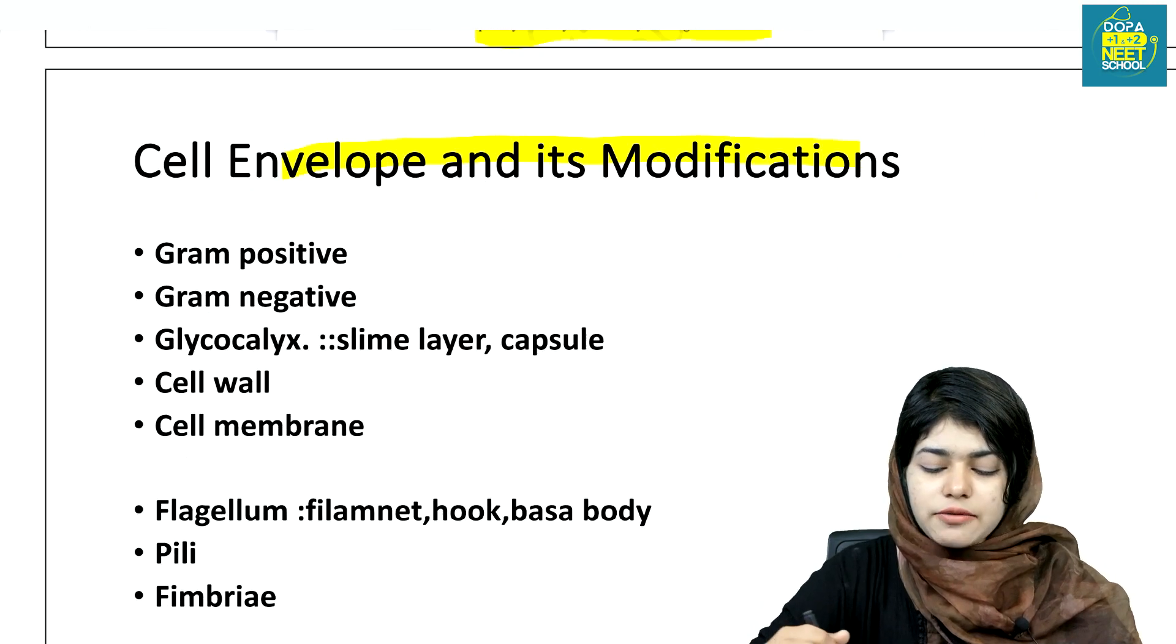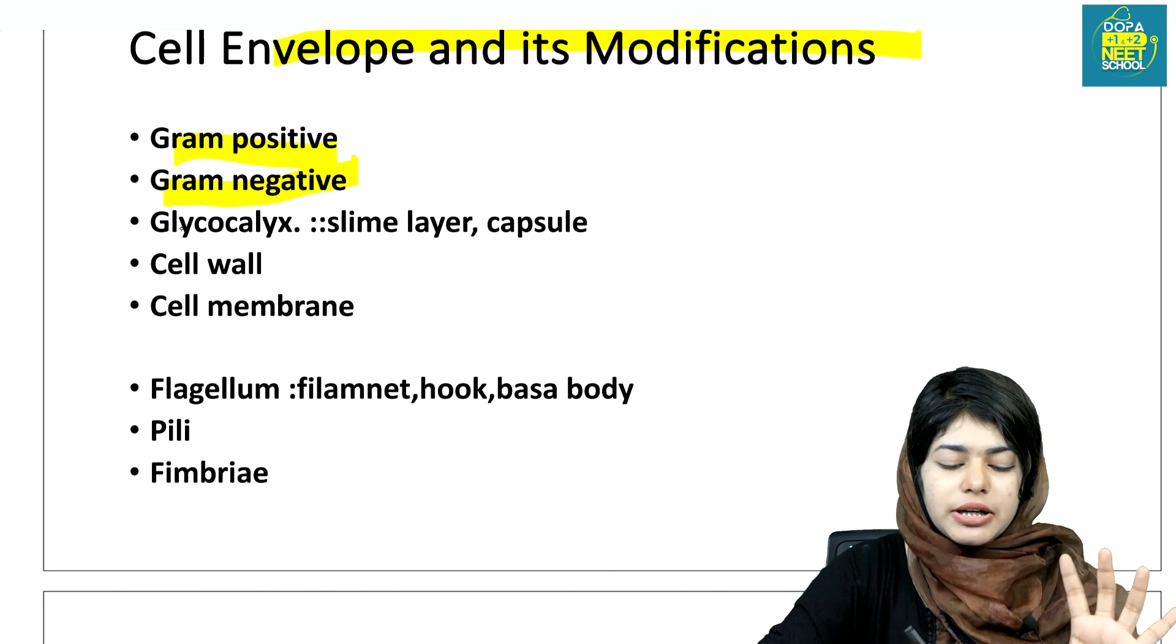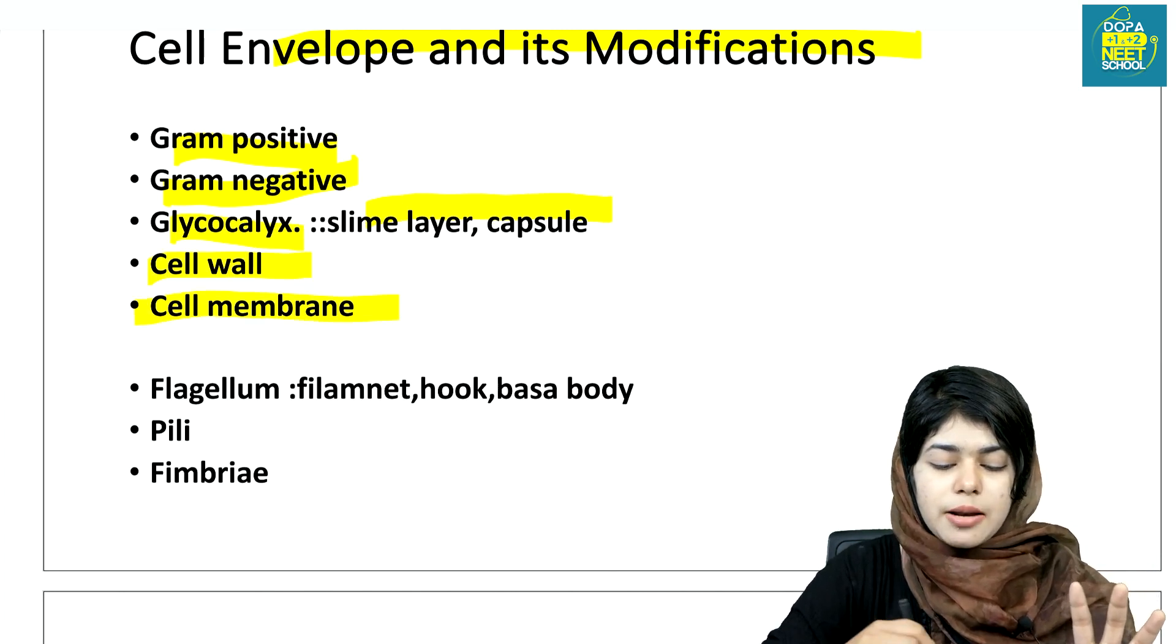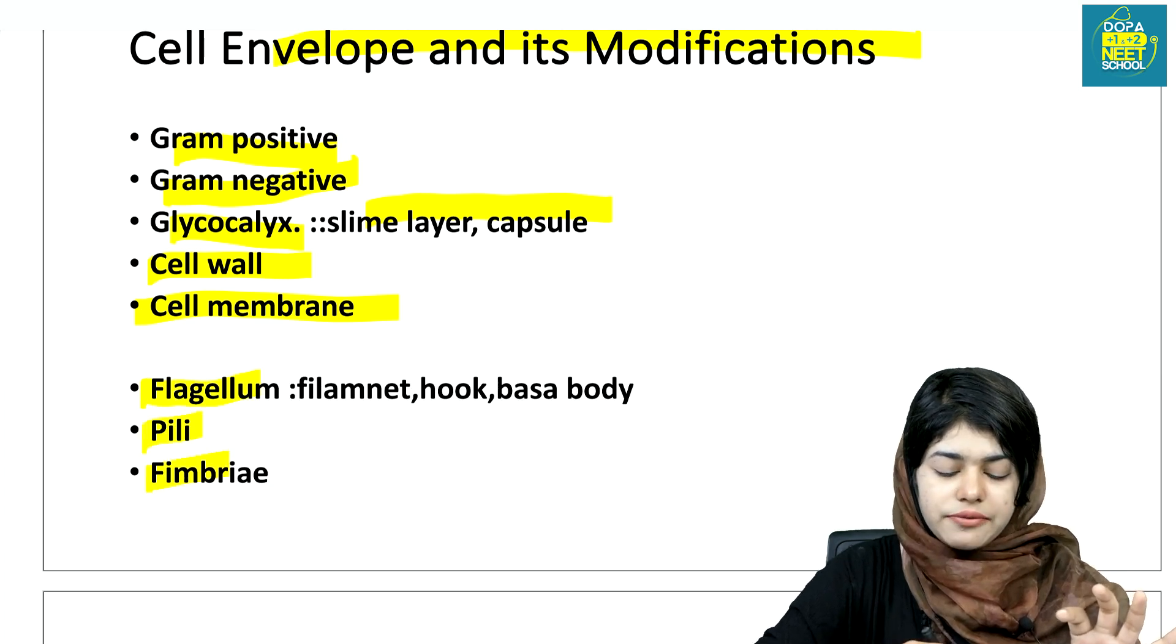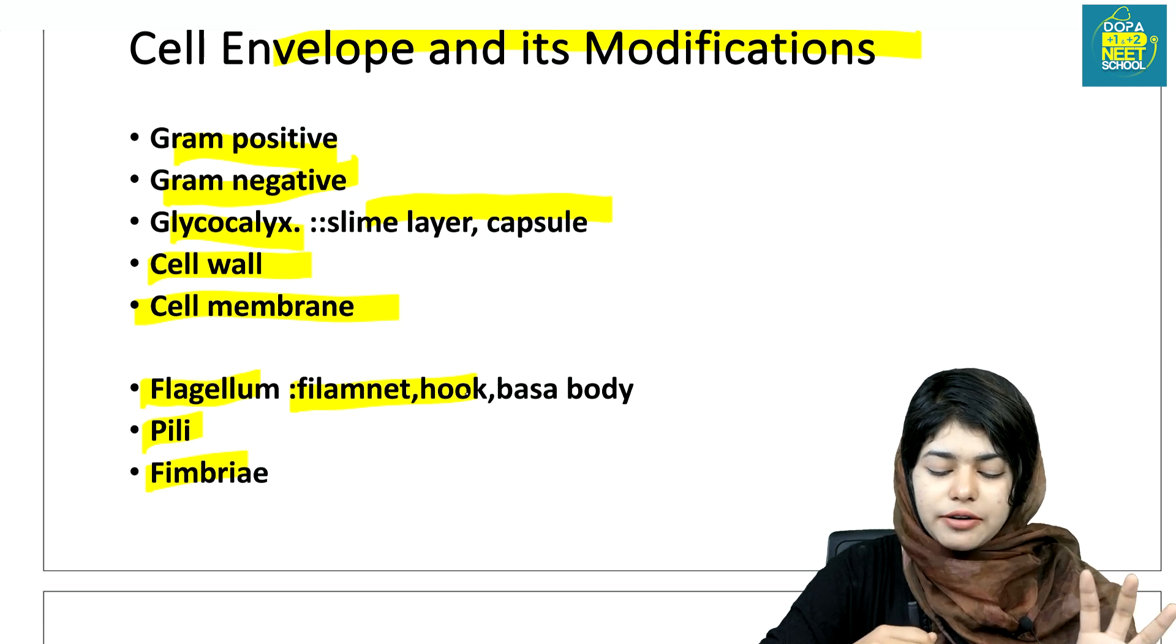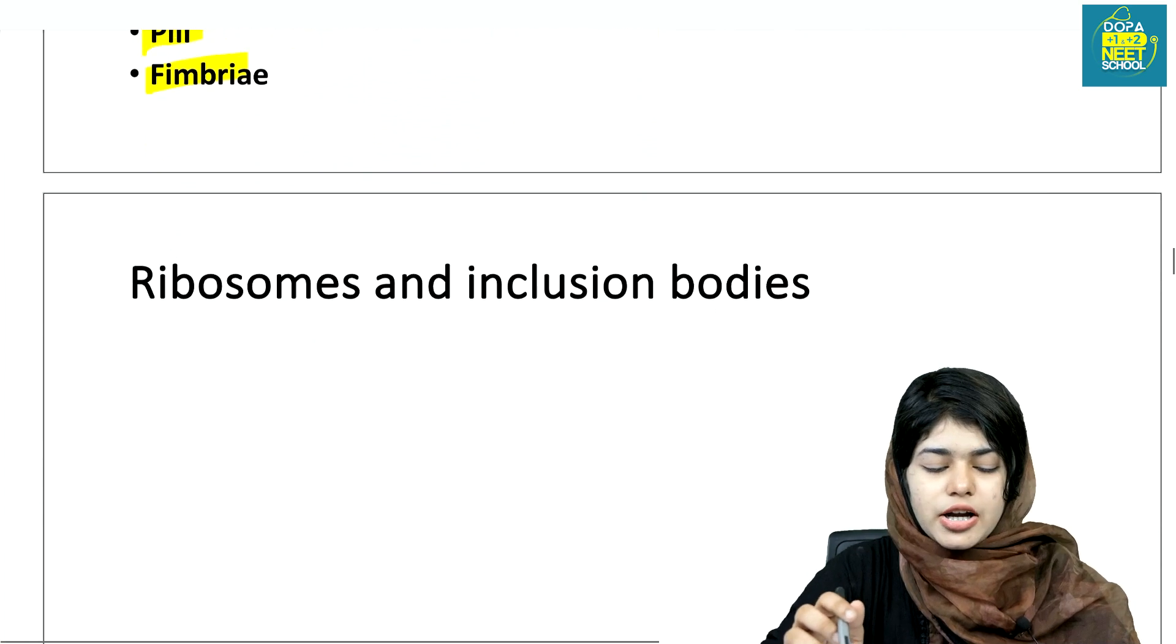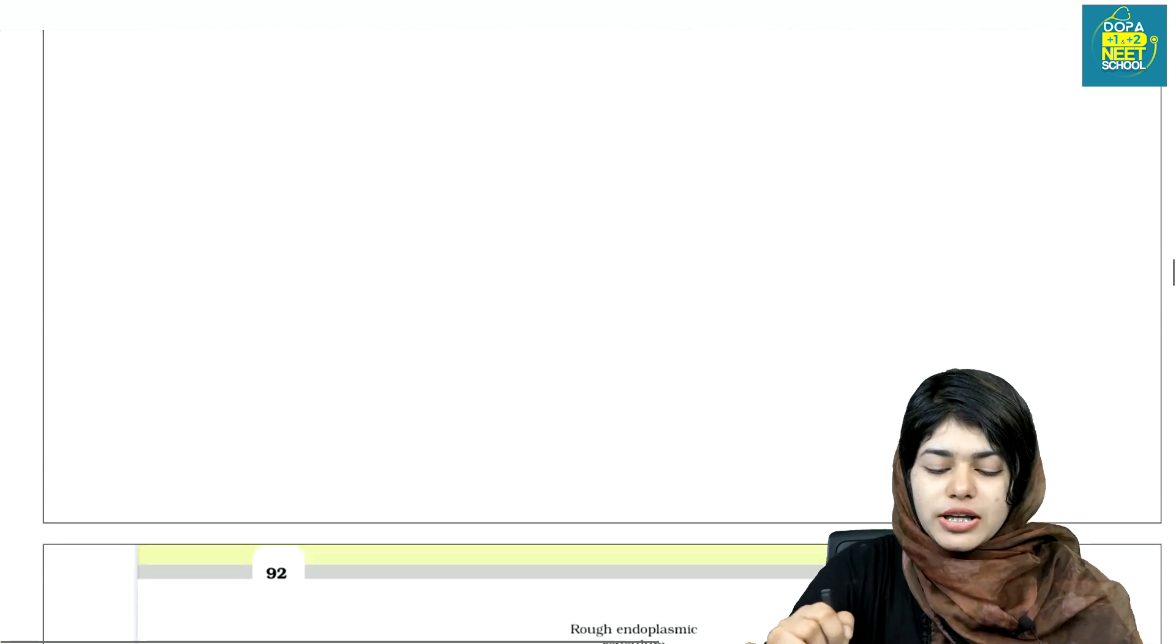Looking at cell envelope, there's gram-positive and gram-negative. We have glycocalyx, which is the slime layer or capsule, cell wall, and cell membrane. Flagella has filament, hook, and basal body. Don't confuse pili with fimbriae. Then there are ribosomes and inclusion bodies.